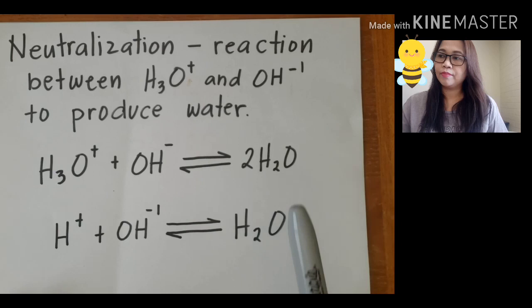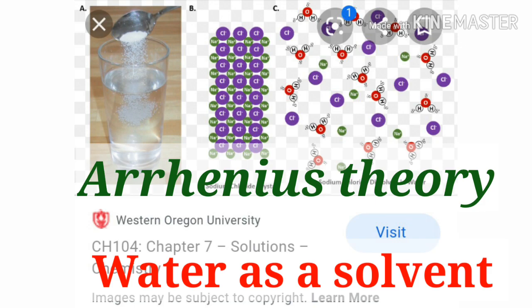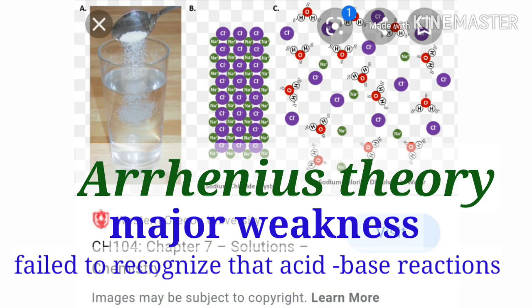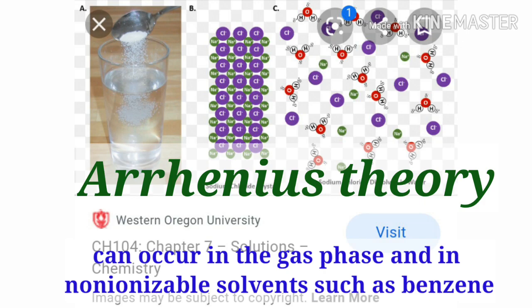In the Arrhenius theory, the role played by water as a solvent and the phenomenon of ionic dissociation are central to acid-base behavior. Its major weakness was that it failed to recognize that acid-base reactions can occur in the gas phase and in non-ionizable solvents such as benzene.